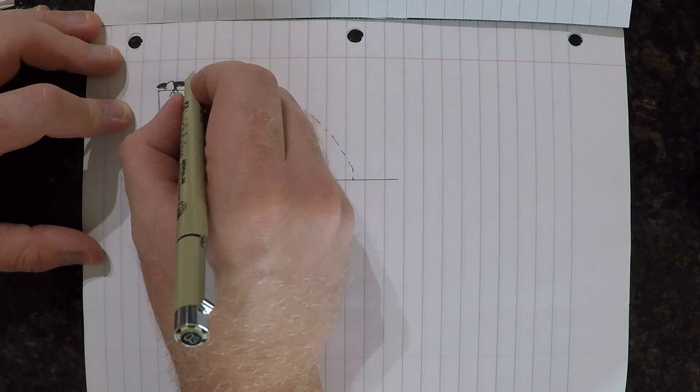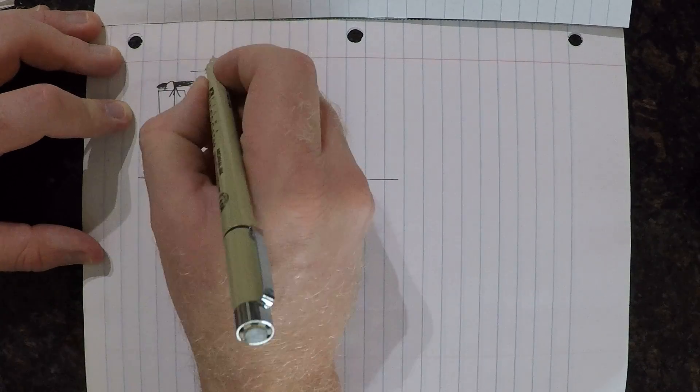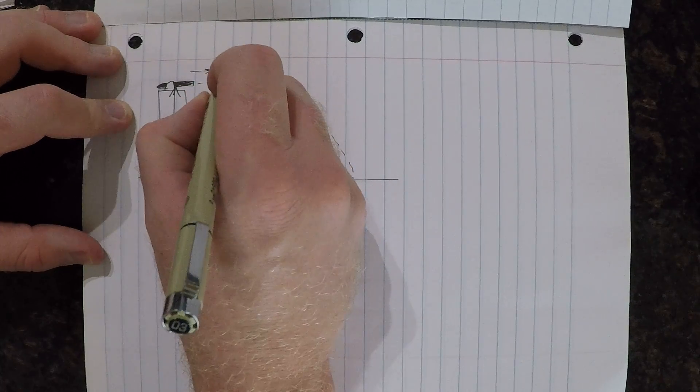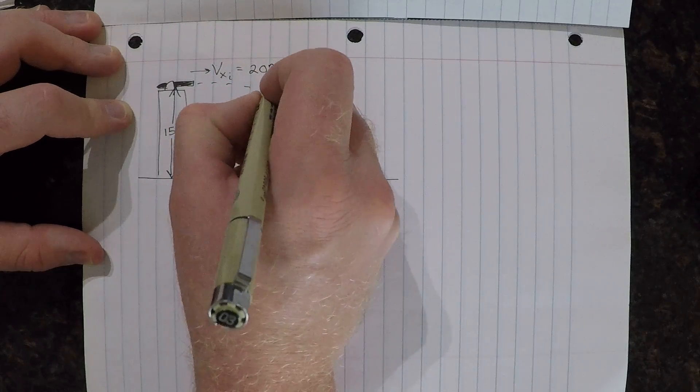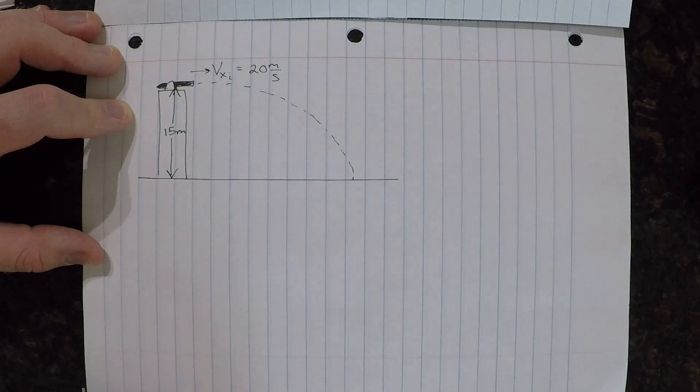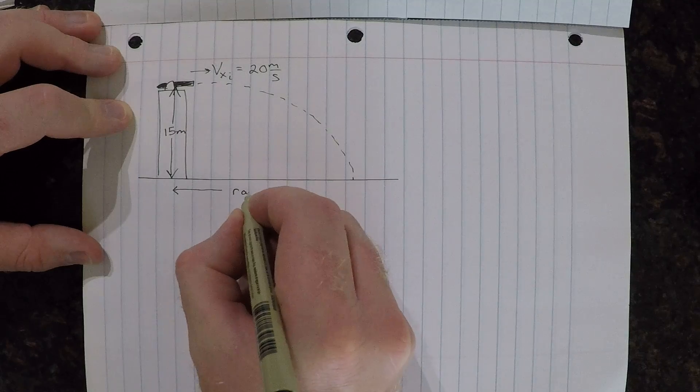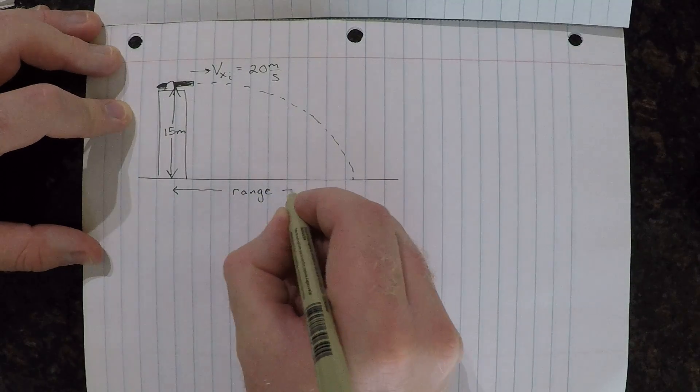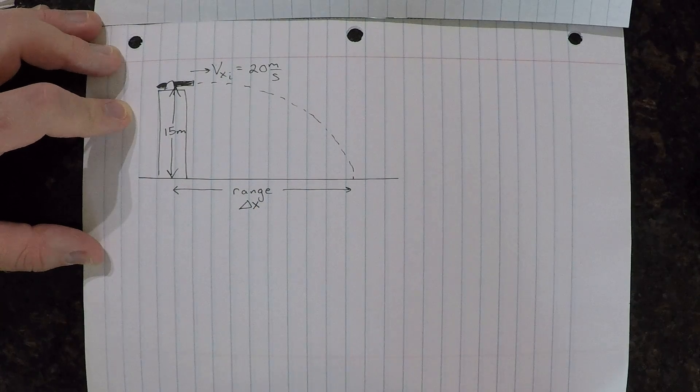Let's also say that we're going to fire our cannon with an initial velocity in the x-direction, that is the horizontal direction, of 20 meters per second. What we'll also say is we'd like to find out what the range is, the range of our projectile, and that's going to be our displacement in the horizontal direction.